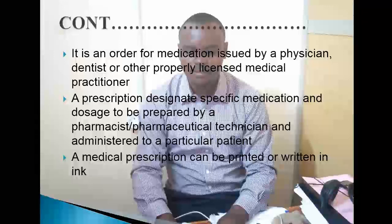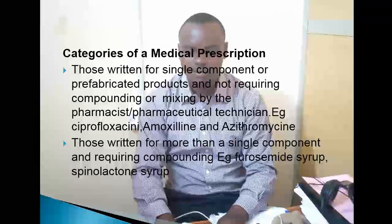Lakini prescriptions zinapaswa kuwa na seal — muhuri wa institutional husika. Kwa category za medical prescriptions, kuna aina mbili: prefabricated products na compounding. Prefabricated products ni dawa ambazo zimekwisha andaliwa tayari kwa ajili ya matumizi — mfano ciprofloxacin, amoxicillin, azithromycin, paracetamol, cetirizine, propranolol, atenolol, na dawa nyingine nyingi.